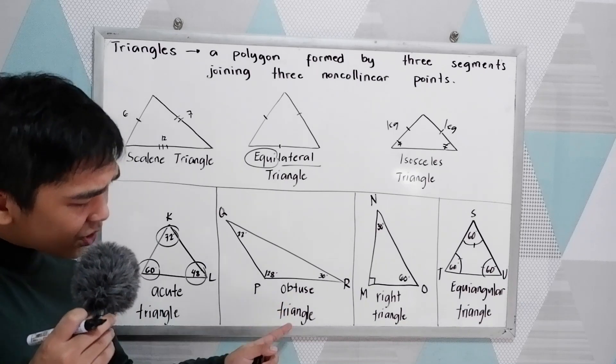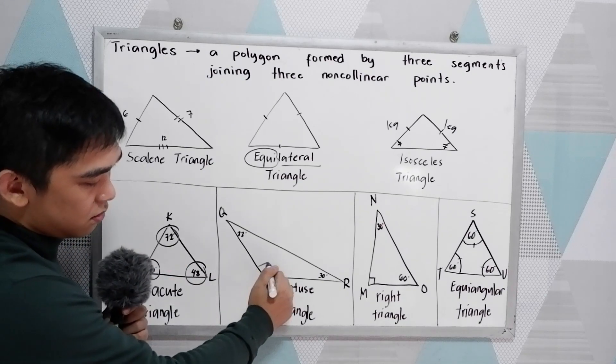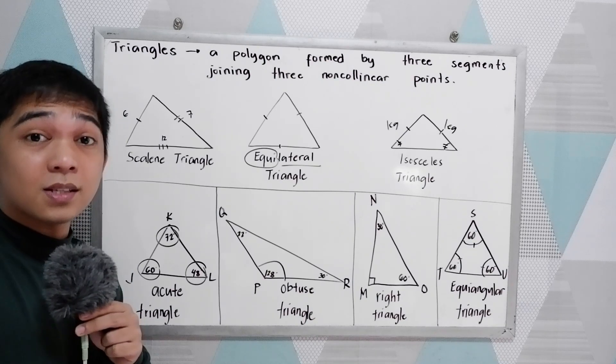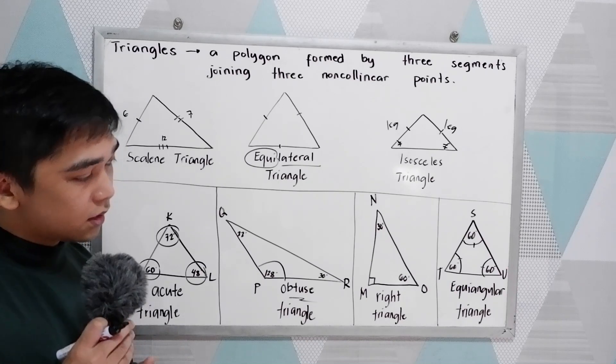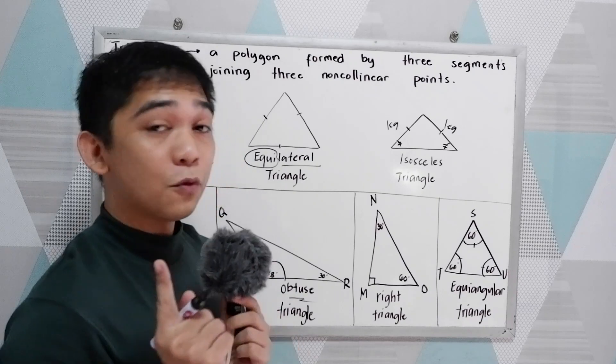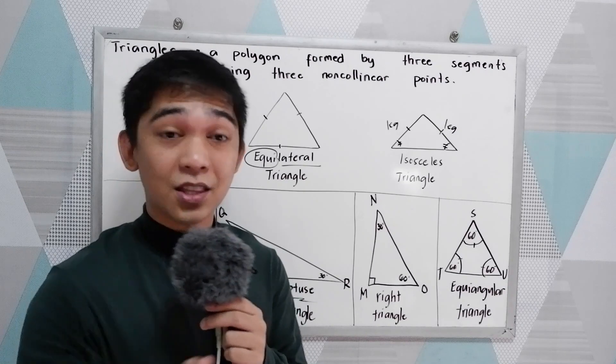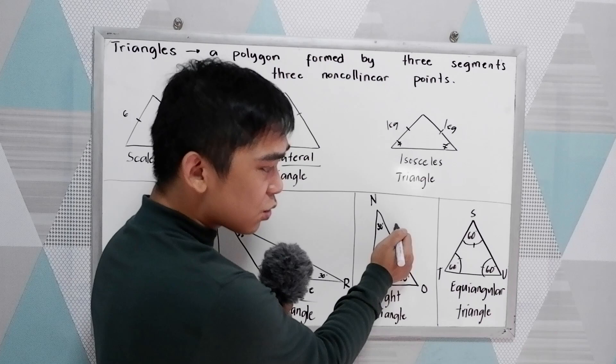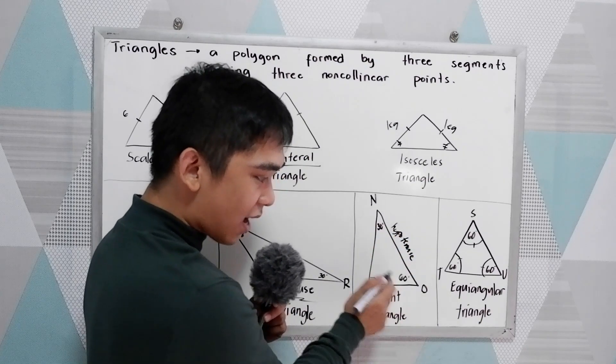We also have the right triangle. If one angle of our triangle is equal to 90 degrees, we have the perpendicular line here. And opposite the perpendicular is what we call the hypotenuse, and these are our legs.